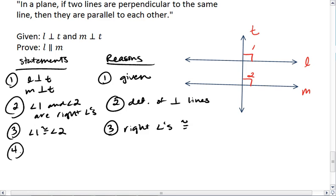If angle 1 and angle 2 are congruent, then that must mean that L is parallel to M, because if we have two lines cut by a transversal and corresponding angles are congruent, then the lines are parallel.